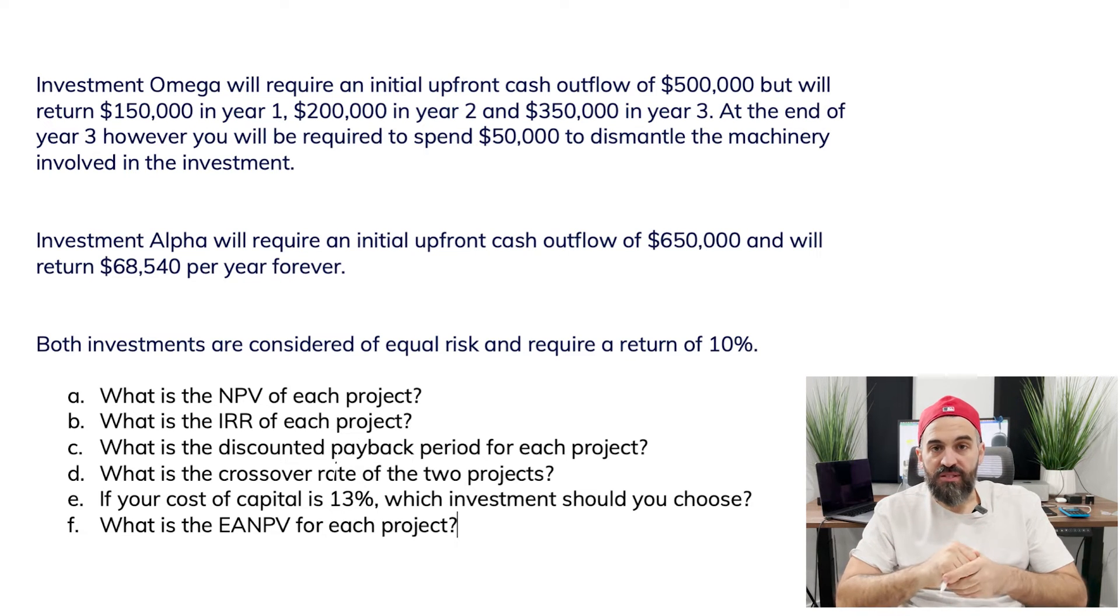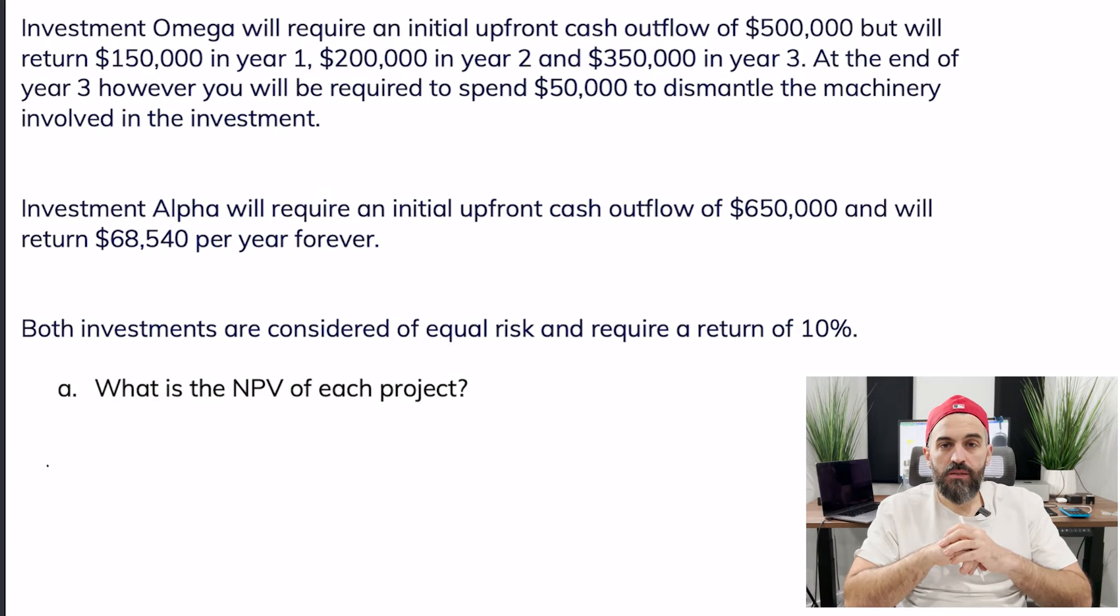The other investment, Alpha, is a perpetual investment meaning you're going to invest $650,000 right now but receive $68,540 per year forever.